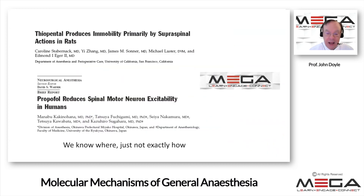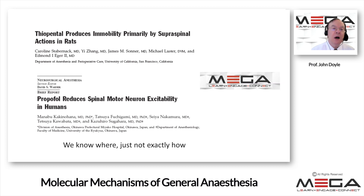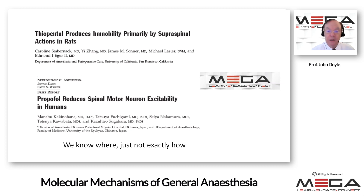We know where anesthesia works in some cases, just not exactly how. One study found that thiopental produces immobility primarily via supraspinal action in rats. In a second study, propofol reduces spinal motor neuron susceptibility in humans. So the spinal cord is involved in immobility, and various other aspects of the pillars of anesthesia work in various different parts of the brain.